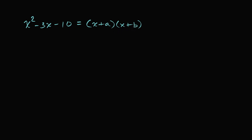Let's work through this together. I'll highlight a and b in different colors — a in yellow and b in magenta. One way to think about it: let's just multiply these two binomials using a and b. You might want to review multiplying binomials if any of this looks strange. If you multiply the right-hand side out, you get x times x, which is x squared, then a times x which is ax, and then b times x which is bx.